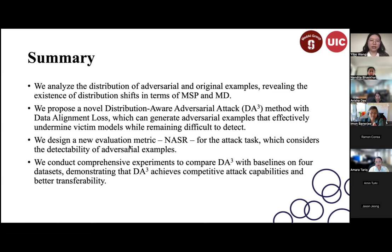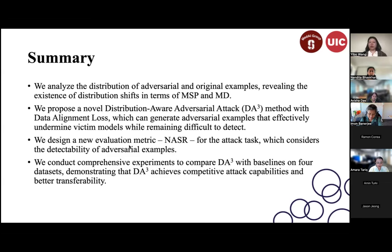To summarize the first paper: we analyze distribution shifts between adversarial and original examples, propose DA3—a distribution-aware adversarial attack generating successful and non-detectable examples—and design a new evaluation metric NASA combining attack success rate and detectability. We encourage future attack methods to consider detectability to ensure effectiveness under different detection methods.